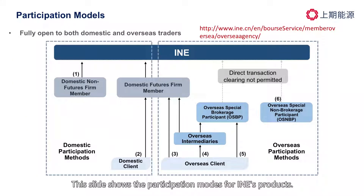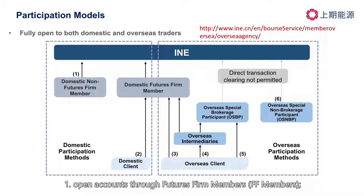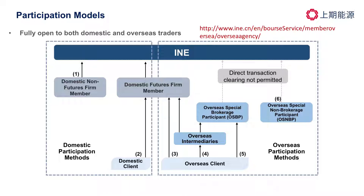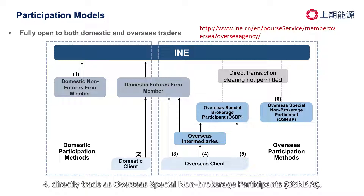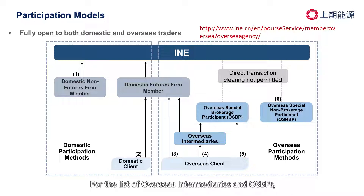Overseas clients have four ways to participate in INE's products. One, open accounts through futures firm members, that is, FF members. Two, open accounts through overseas intermediaries. Three, open accounts through overseas special brokerage participants, that is, OSBPs. And four, directly trade as overseas special non-brokerage participants, which is OSNBPs. For the list of overseas intermediaries and OSBPs, please refer to our website by following the provided link.